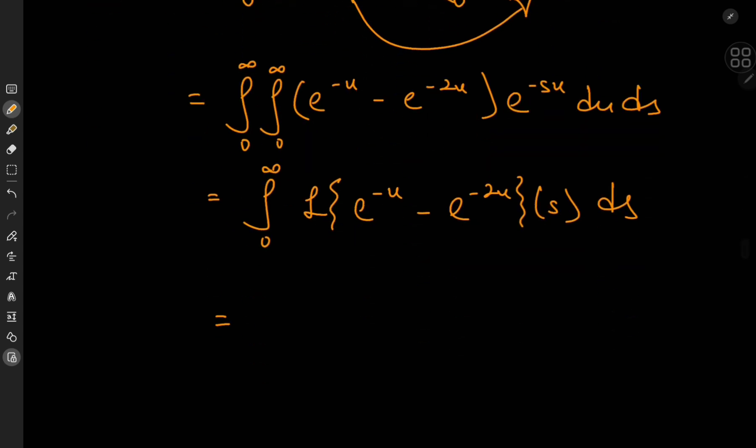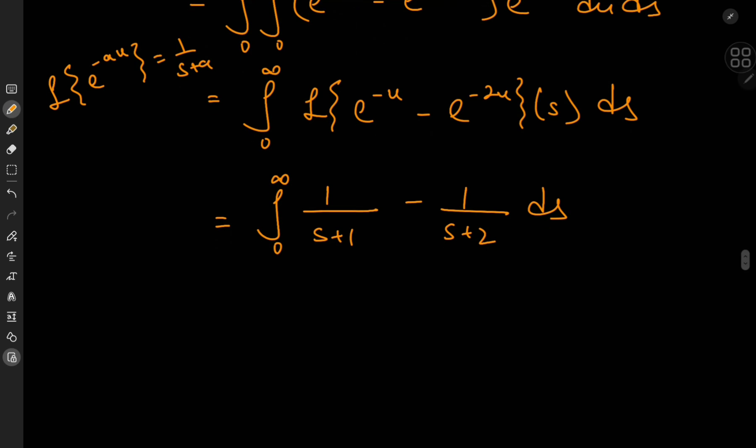Okay, so we know exactly what the Laplace transform of e to the a times t is, or in this case u, that would be 1 by s plus a with the negative sign here. So that means I have the integral from 0 to infinity of 1 by s plus 1 minus 1 by s plus 2 integration with respect to s.